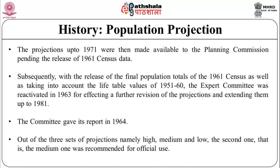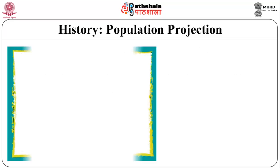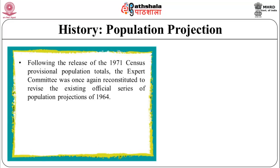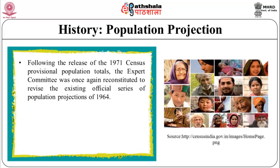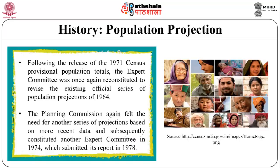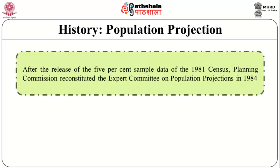Out of the three sets of projections — namely high, medium and low — the medium one was recommended for official use. Following the release of the 1971 census provisional population data, the Expert Committee was once again reconstituted to revise the existing official series of population projections of 1964. The Planning Commission again felt the need for another series of projections based on more recent data and subsequently constituted another Expert Committee in 1974, which submitted its report in 1978. After the release of the 5% sample data of the 1981 census, the Planning Commission reconstituted the Expert Committee on Population Projections in 1984.